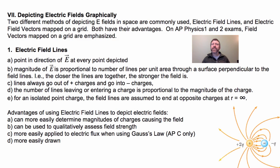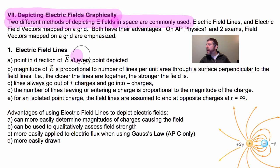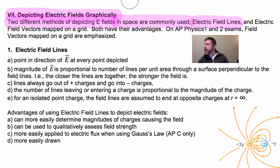Now we're going to talk about depicting electric fields in a graphical manner. This is very important. There are all kinds of problems you can figure out just by drawing the field graphically. There are two different methods of depicting these fields in space, both commonly used: electric field lines, and electric field vectors mapped on a grid.